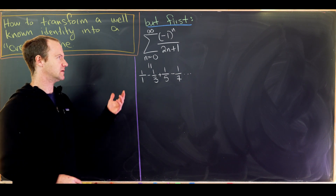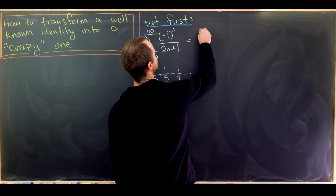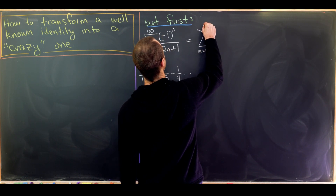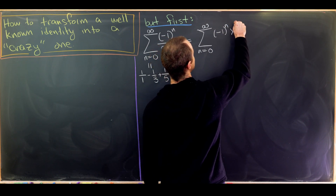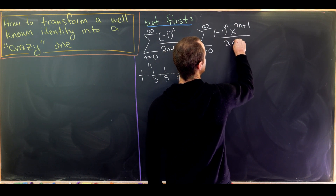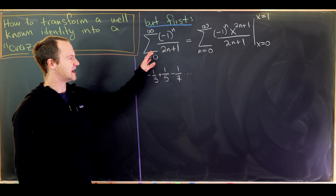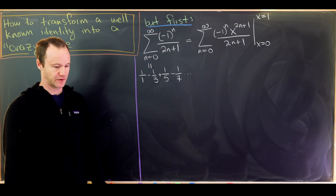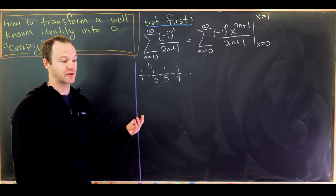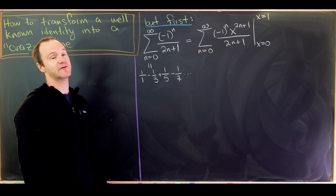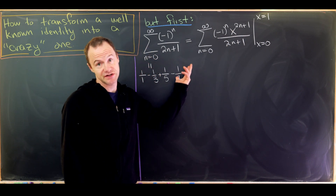A lot of you watching may know what this sums to, but we're going to derive it just for completeness. This is equal to the sum as n goes from zero to infinity of (-1)^n times x^(2n+1) over (2n+1), evaluated from x=0 to x=1. I've taken my sum and rewritten it as what I like to call a zeroth integral — a function evaluated at two endpoints. From here, we can apply the fundamental theorem of calculus to turn this zeroth integral into a first integral, taking a derivative and changing it into an integral.